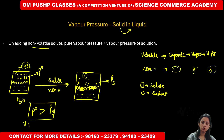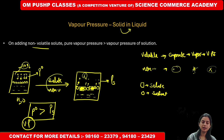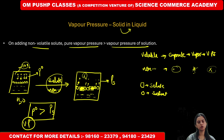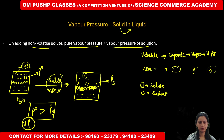The vapor pressure of the pure solvent is more compared to the vapor pressure of your solution. Why? Because we added a non-volatile solute into the solution, which is why vapor pressure is less. Pure vapor pressure P naught is greater than vapor pressure of solution Ps.